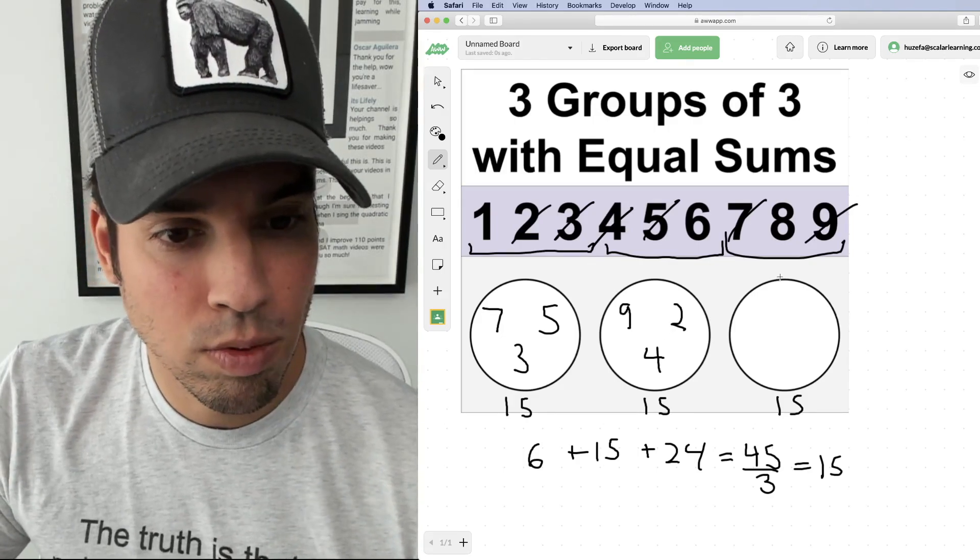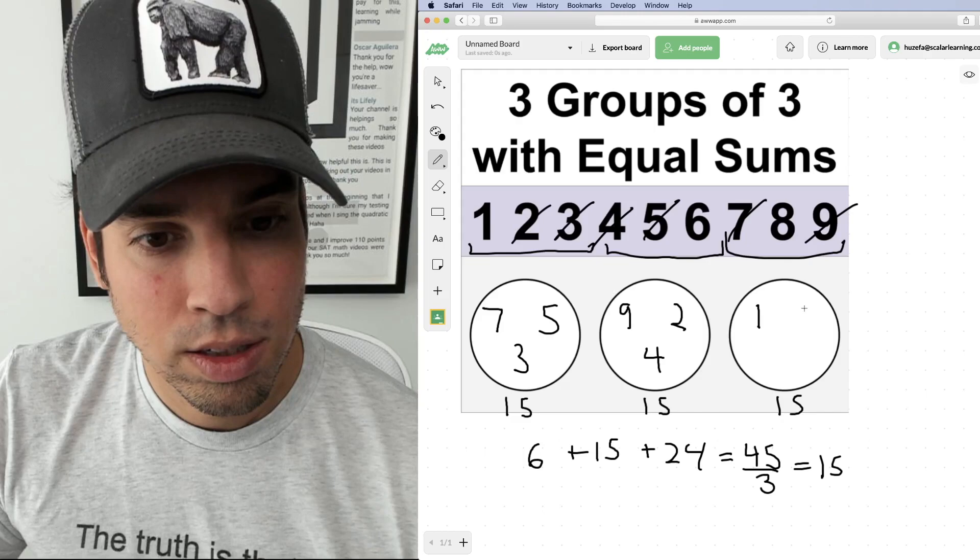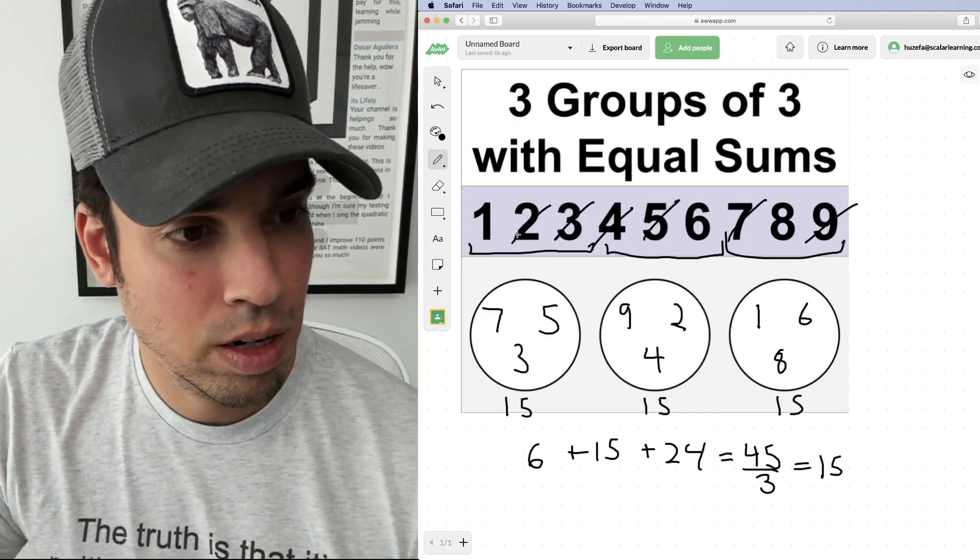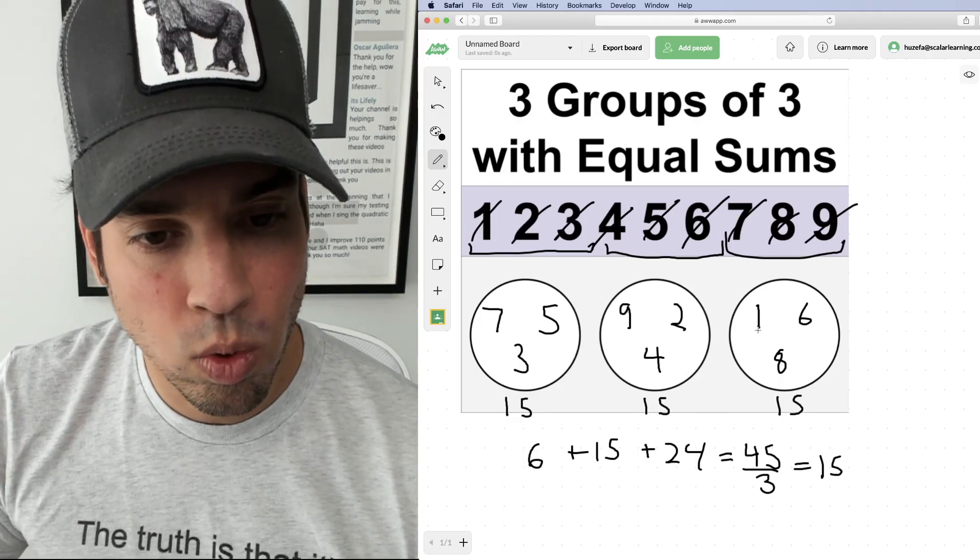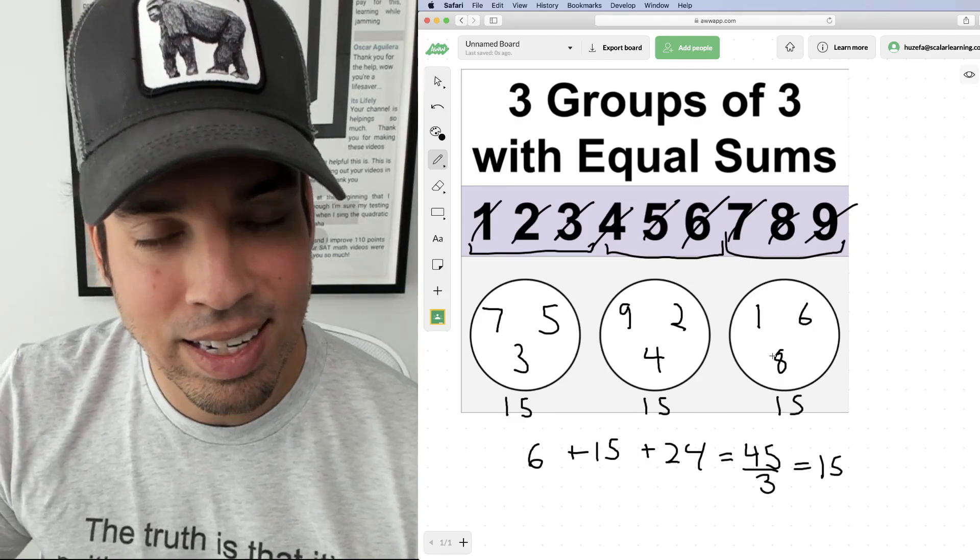Last but not least, let's take the remaining numbers. One, six, and eight. And these guys as well add up to one plus six is seven plus eight is 15.